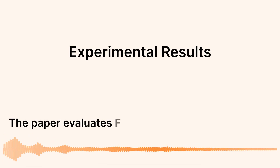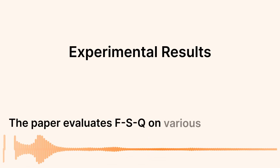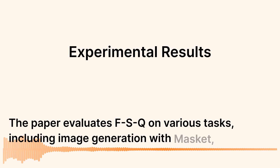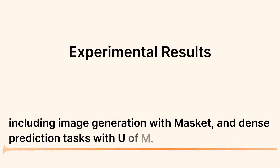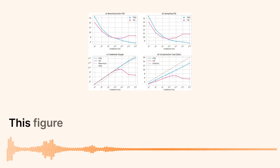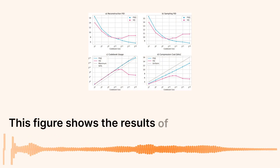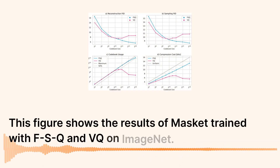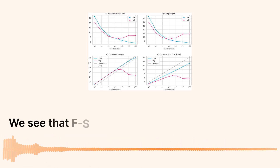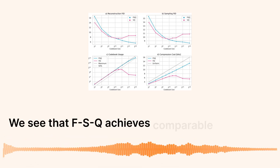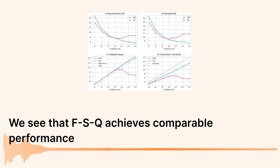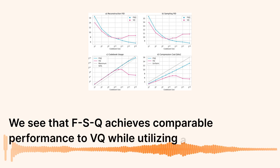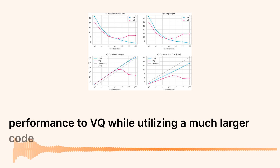The paper evaluates FSQ on various tasks, including image generation with MaskGIT and dense prediction tasks with UViM. This figure shows the results of MaskGIT trained with FSQ and VQ on ImageNet. We see that FSQ achieves comparable performance to VQ while utilizing a much larger codebook.